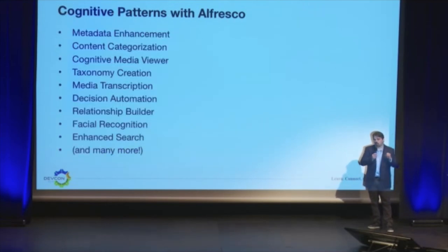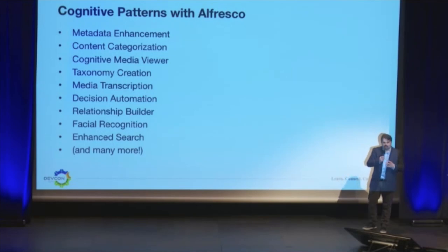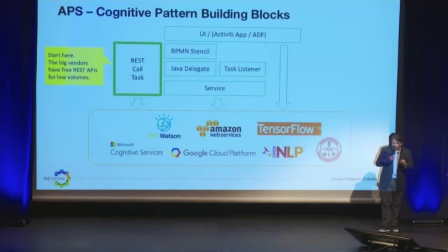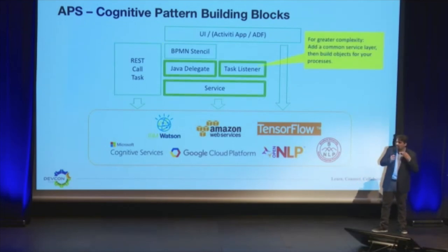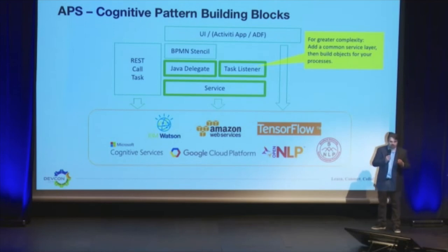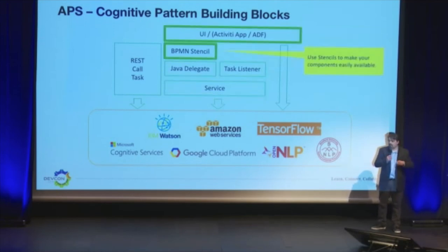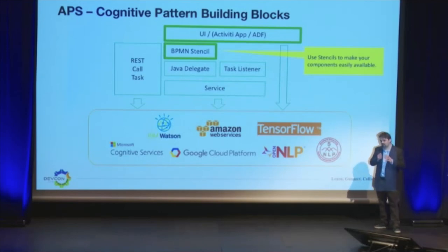When we think about cognitive patterns with Alfresco, there are some simple ones: metadata enhancement — you can stop filling in forms and have it automatically populate values, categorize the content, move it to the correct location, or even have cognitive media viewers. From a building block standpoint, for APS there's a REST call task — your lowest barrier to entry. You can interact with RESTful services, build service classes, Java delegates, task listeners, and build stencils so users can create workflows with this functionality built in.